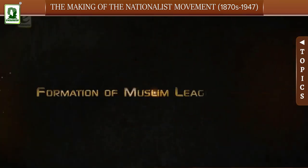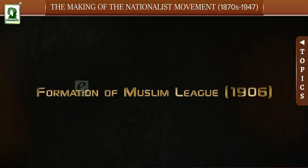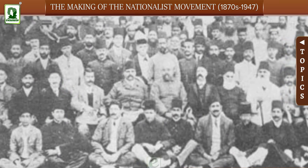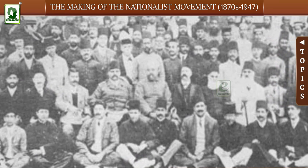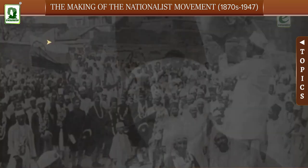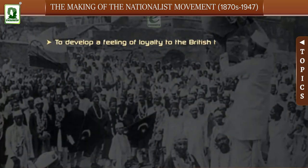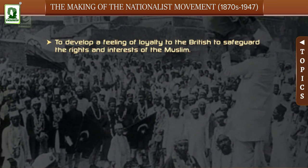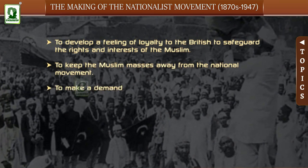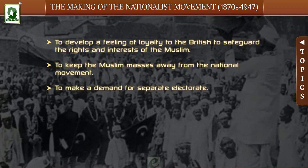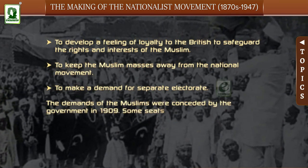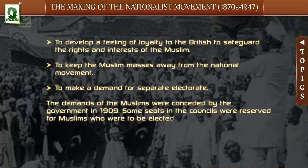Formation of the Muslim League, 1906: In 1906, a group of Muslim landlords and Nawabs formed the All India Muslim League under the leadership of Aga Khan. The main aims of the League were: to develop a feeling of loyalty to the British; to safeguard the rights and interests of Muslims; to keep the Muslim masses away from the national movement; and to make a demand for a separate electorate. The demands of the Muslims were conceded by the government in 1909, and some seats in the council were reserved for Muslims elected by Muslim voters.